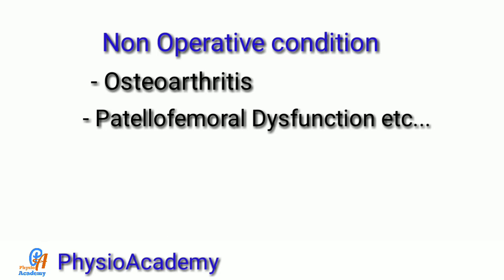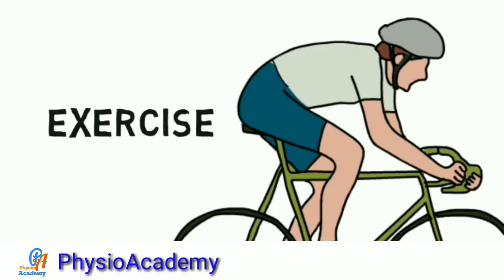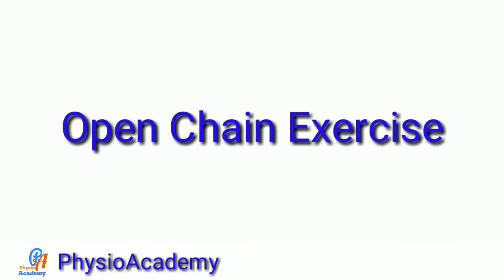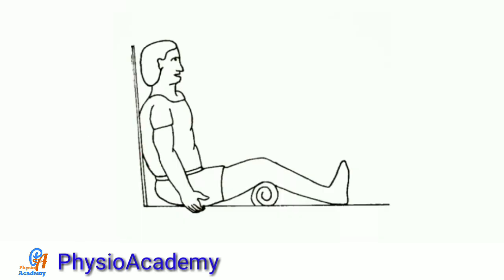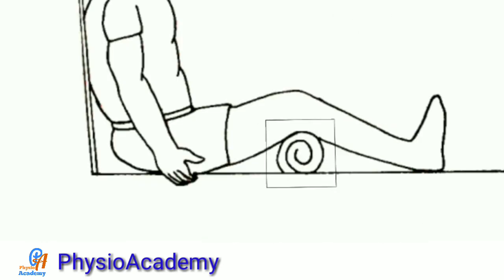First one is last degree of knee extension. Patient position is long sitting or supine lying. Put a towel roll below the knee joint, then ask the patient to extend the knee joint and hold that position for five seconds, then back to starting position.